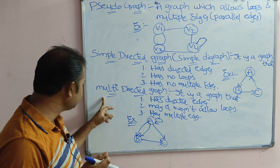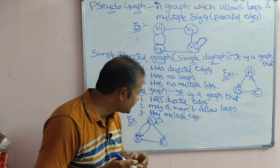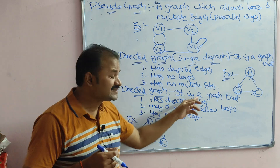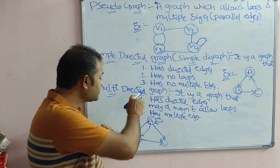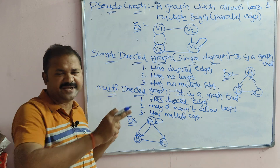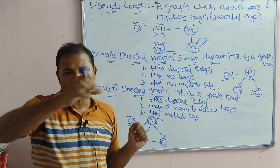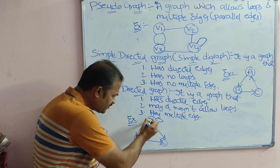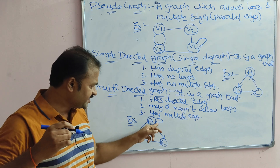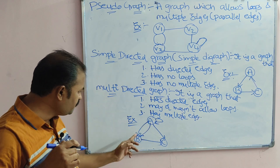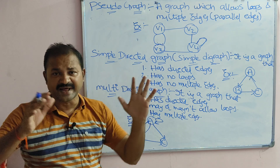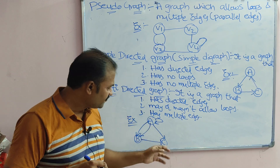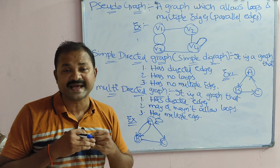Now let's see the last terminology: multi directed graph. It is a graph that has directed edges — the name itself specifies the meaning. Since it is directed, the edges must contain directions. For example, from A to A we have a directed edge — that is a loop. From A to B, B to C, and A to C we also have directed edges.